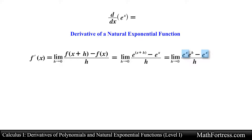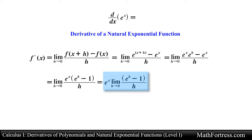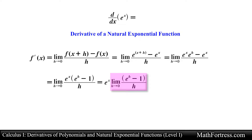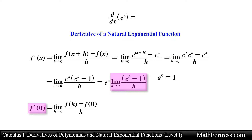We factor out the common e to the x term, giving us e to the x times the limit as h approaches 0 of the quantity e raised to the power of h minus 1 over h. We can't substitute 0 for h since division by 0 is undefined. Notice this expression does not contain the variable x — the only way this occurs is if x were equal to 0, since any number raised to the power of 0 equals 1. This means the expression is essentially the derivative of the natural exponential function evaluated at x equals 0.